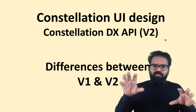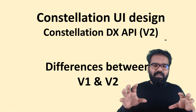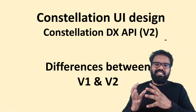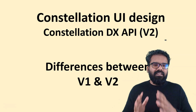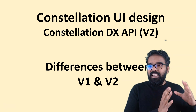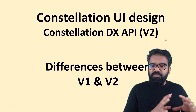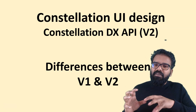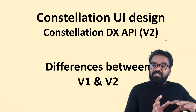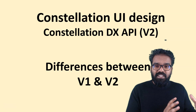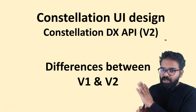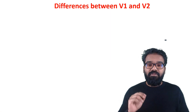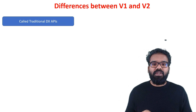Similarly, with the DX API version v1, we had a set of APIs which had some kind of structures. And then with the DX API v2, we have a different set of APIs — or the same set of APIs enhanced — with different structures. Now visually we will look at the differences between version v1 and v2.